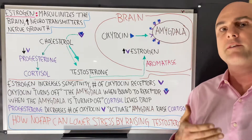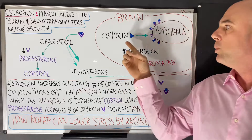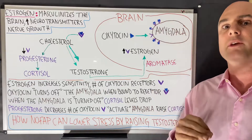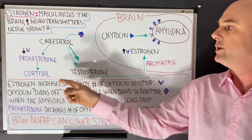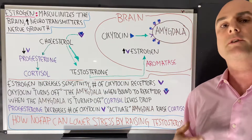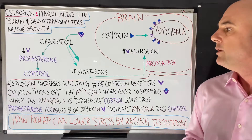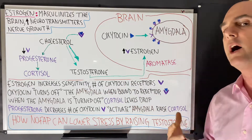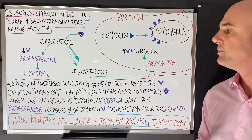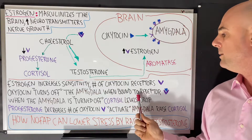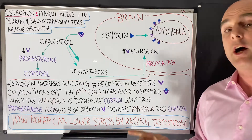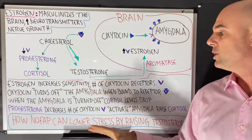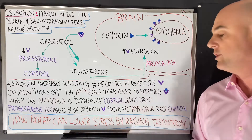So to recap: estrogen increases the sensitivity and number of oxytocin receptors on the amygdala, oxytocin binds those receptors and turns off the amygdala, and that causes a reduction in cortisol production — the stress hormone. As it's written here: estrogen increases the sensitivity and number of oxytocin receptors; oxytocin turns off the amygdala when bound to the receptor; when the amygdala is turned off, cortisol levels drop.